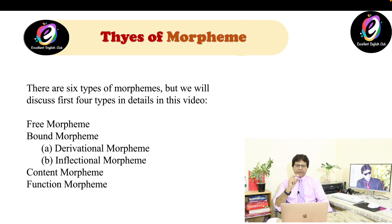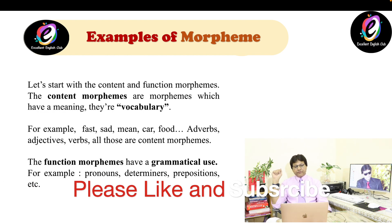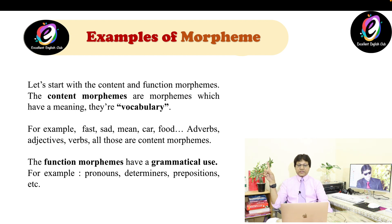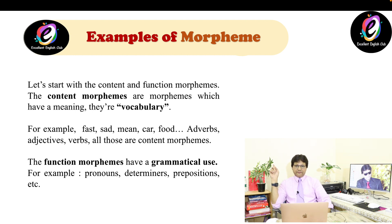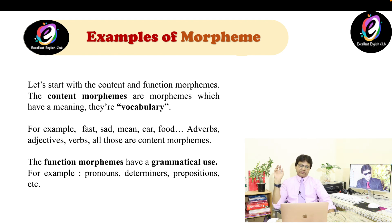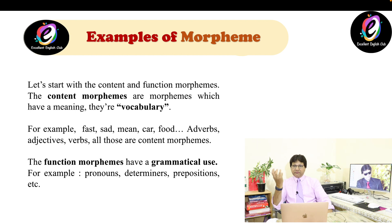Content morphemes are the morphemes which have a meaning — they are vocabulary, meaning they are complete words: verbs, adjectives, adverbs, and so on. For example, words like fast, sad, mean, car, food — these are all content morphemes. Content morphemes are the main words, main verbs.